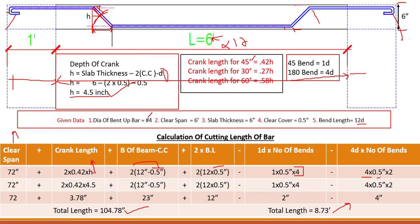I hope you really understand how we can find out the cut length of a crank bar. This is very important because in slab calculations and Bar Bending Schedule (BBS) work, we need all of this. You need to understand the formula, the depth H, the crank length, and the clear span. I'll see you in the next session.